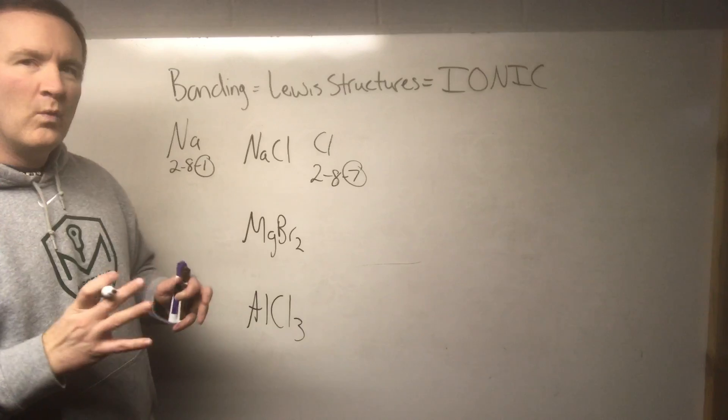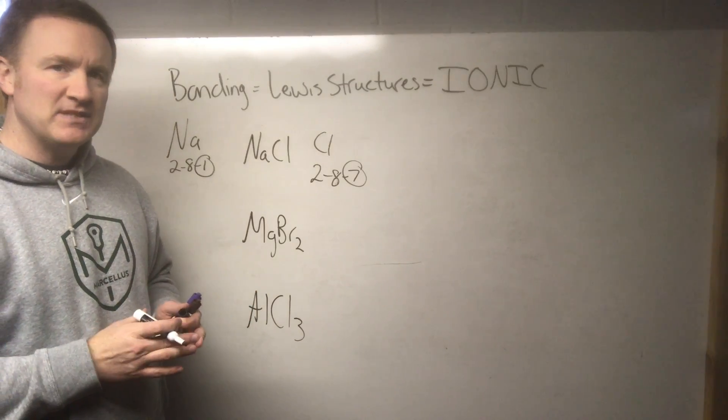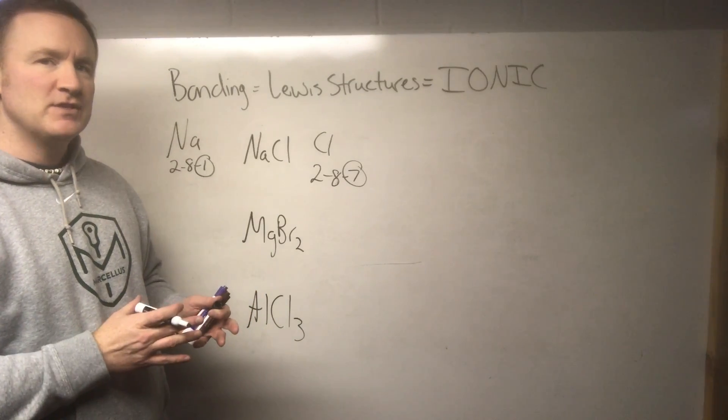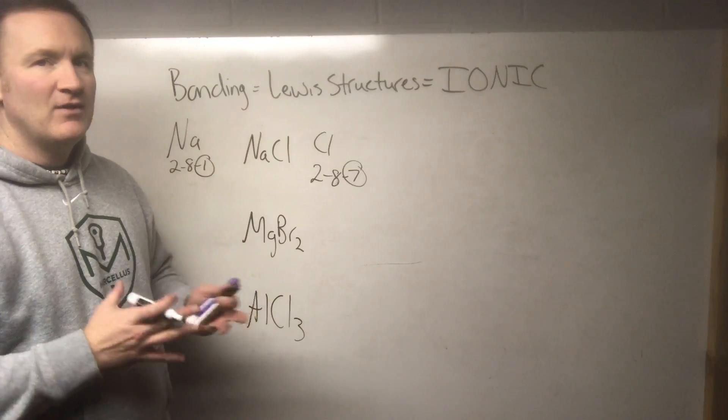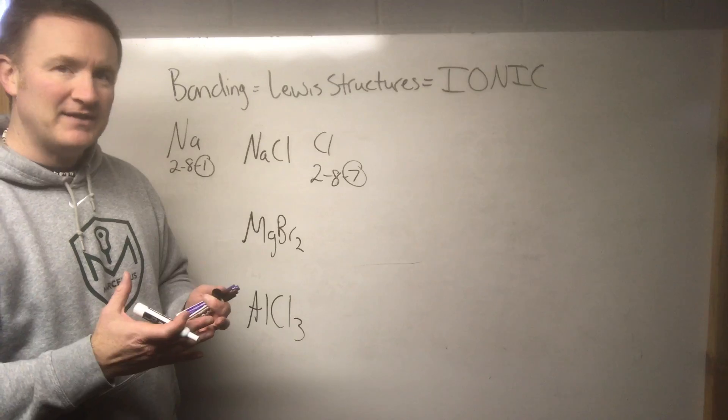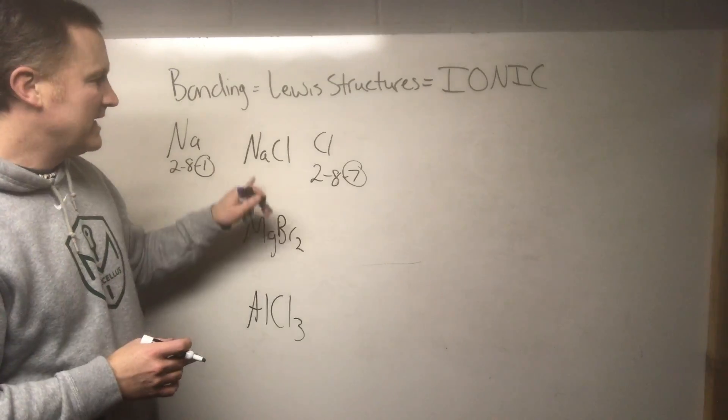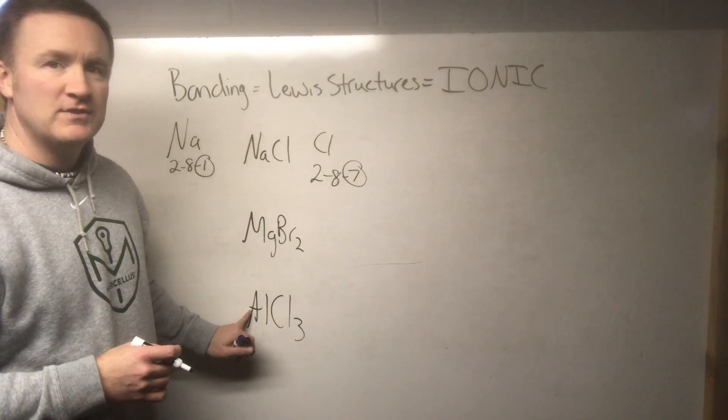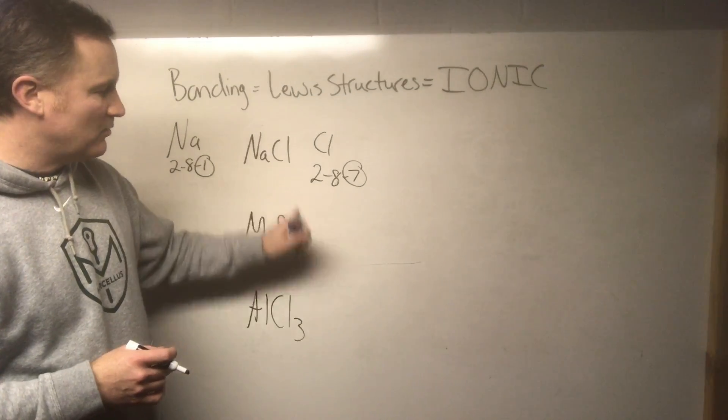One of the main things with ionic substances is that one of the materials loses an electron and becomes positive, one of the materials gains an electron and becomes negative. Then you have opposites attracting and you have a really strong bond. It's always the metal that loses the electron and becomes positive, it's always the nonmetal that gains the electron and becomes negative.